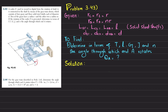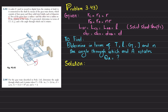Welcome back. In this video we will solve problems 3.43 and 3.44. The statement of 3.43 is: an encoder F used to record in digital form the rotation of shaft A is connected to the shaft by means of a gear train consisting of four gears and three solid steel shafts each of diameter d. Two of the gears have radius r and the other two have radius nr. If the rotation of encoder F is prevented, determine in terms of t, l, g, j, and n the angle through which end A rotates.